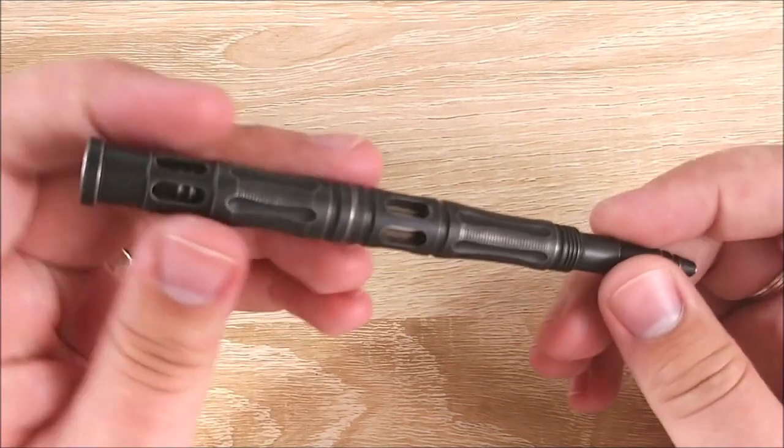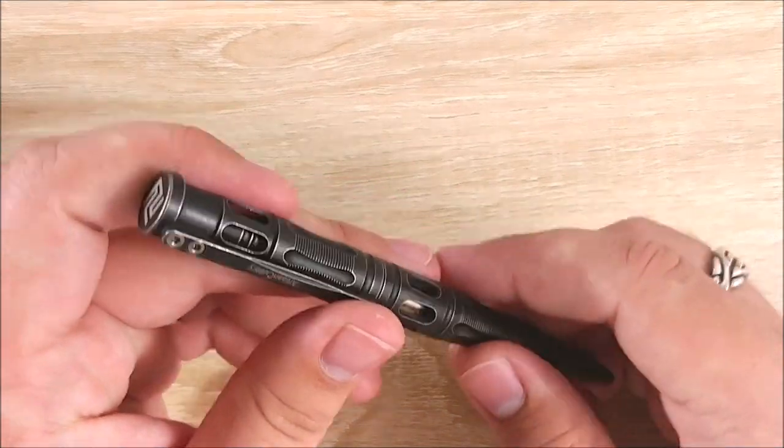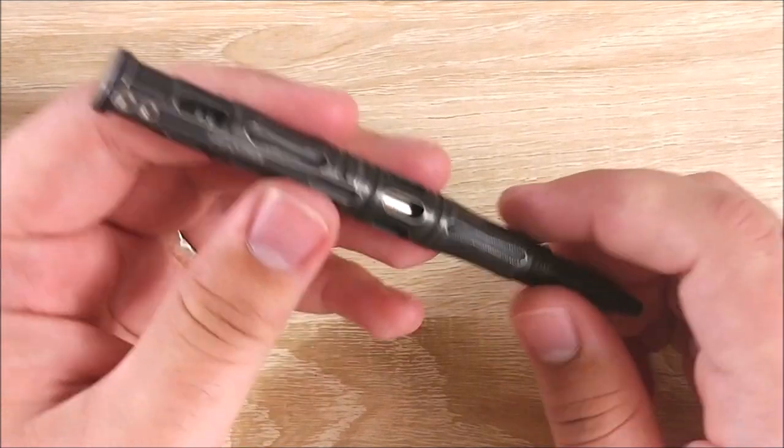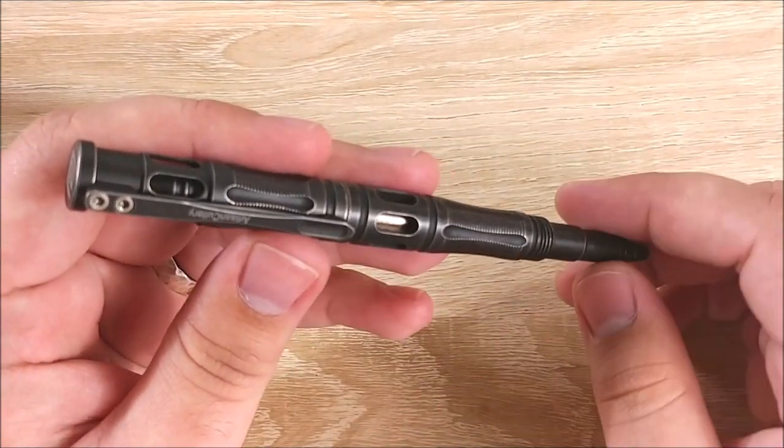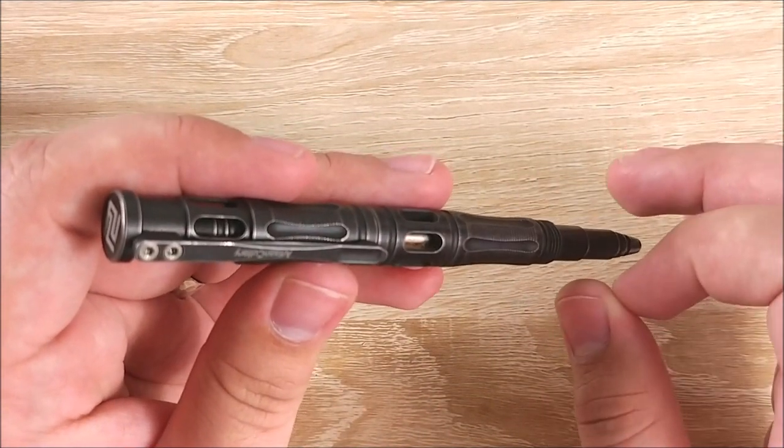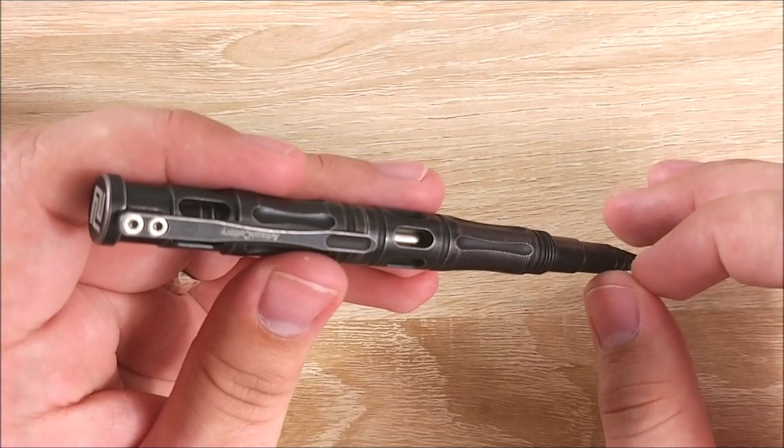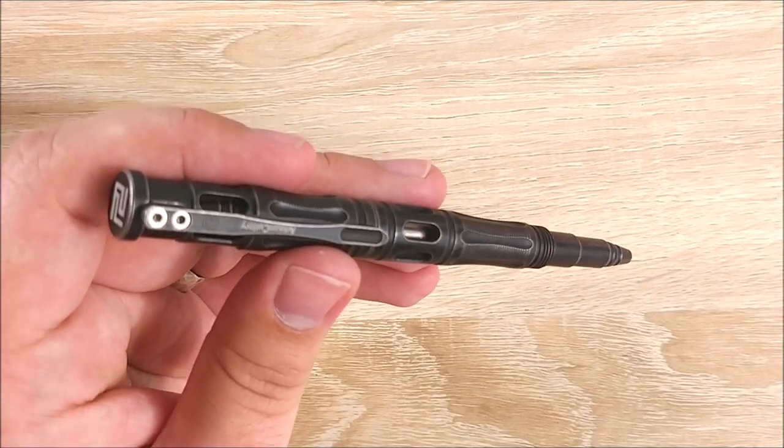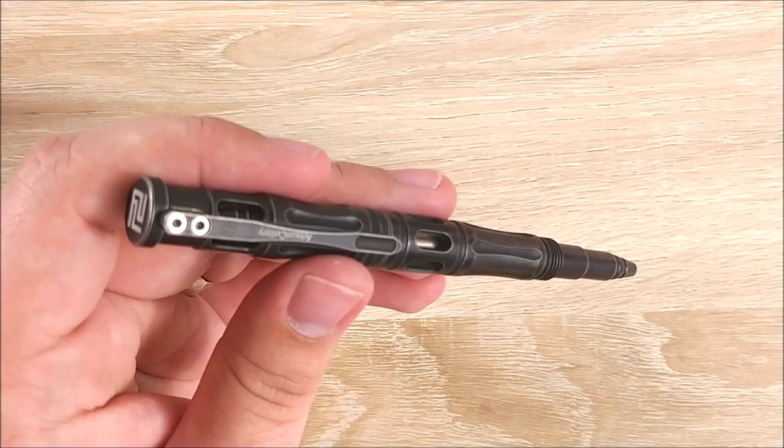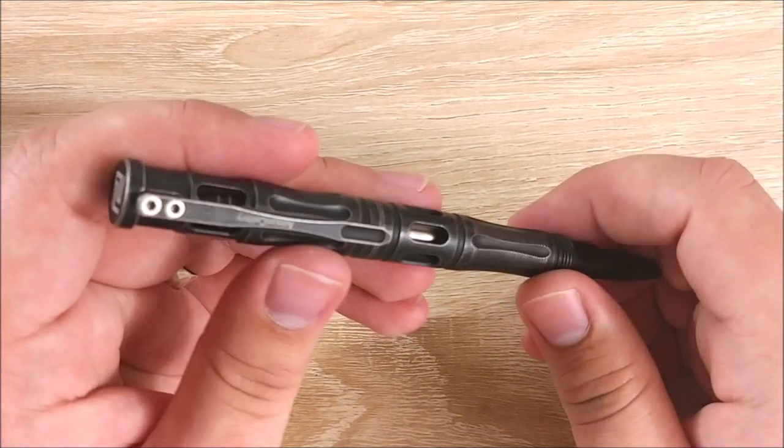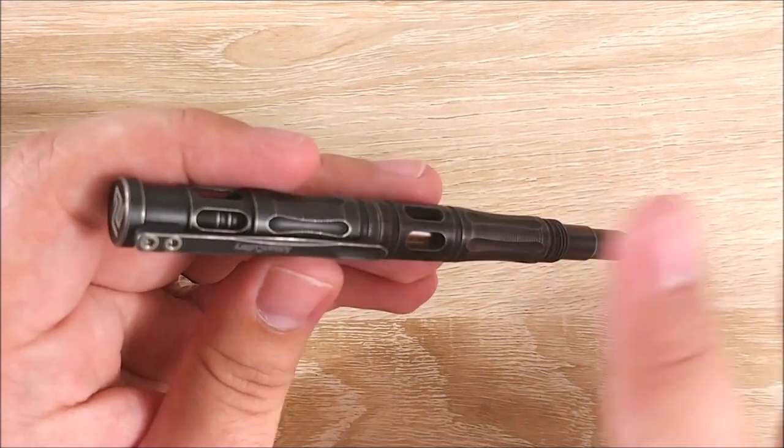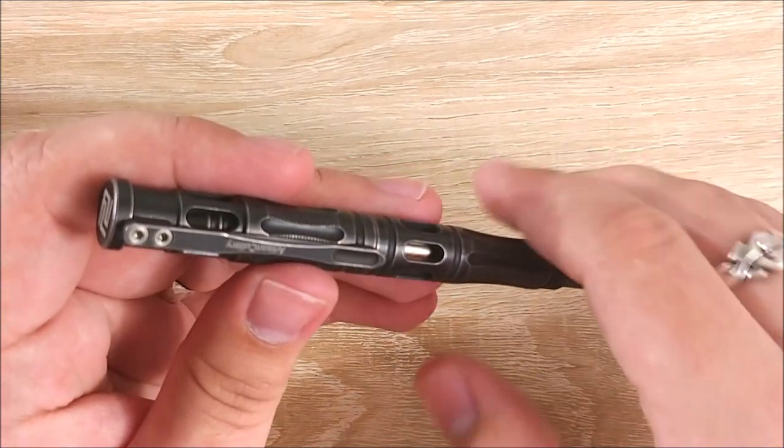Hey everybody, Jake here, and today we're going to take a look at the Artisan Cutlery Tactic. Huge shout out to White Mountain Knives for loaning this to me. You can get a discount at whitemountainknives.com by using the code JT10, Jake's take 10. JT10 will get you 10% off anything in the store, not just this, literally anything they sell.